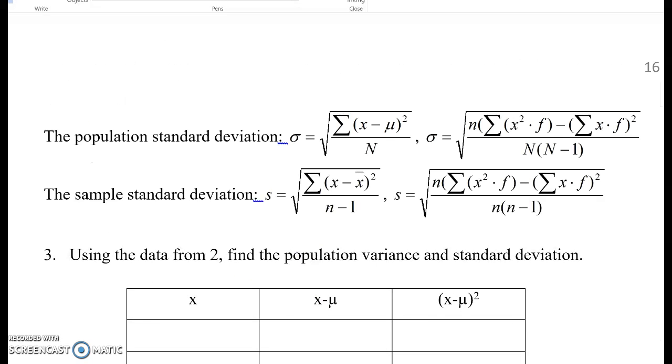Now, the population standard deviation. The notation is sigma that equal to square root of the variance. The another formula, sigma equal to square root of n times sum of each entry square times frequency minus sum of x times f square over n times n minus 1, as you see here.